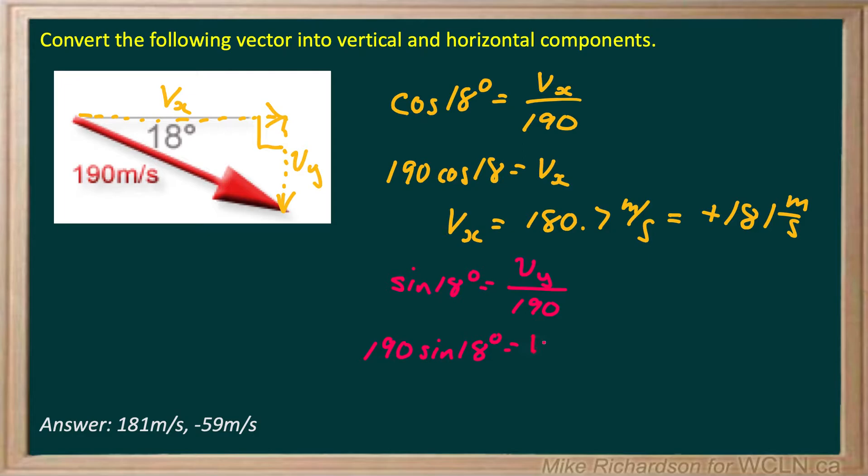And we get vy is 190 sine 18, which gives us 58.71. And because it's down, we're going to say vy is negative.